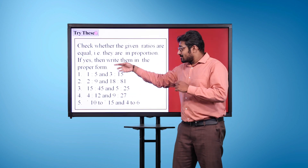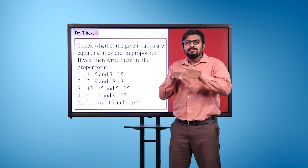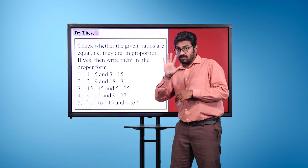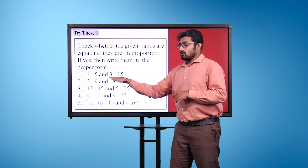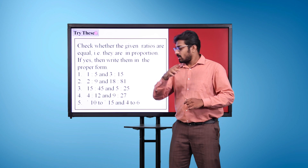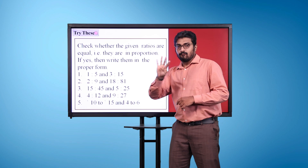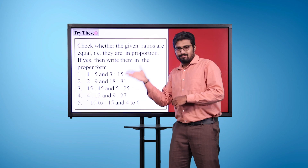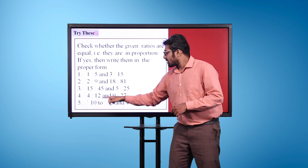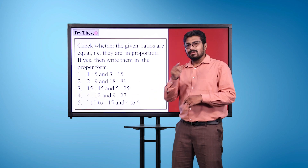Try these. Check whether the given ratios are equal, that is, they are in proportion. If yes, then write them in the proper form. 1. 1 is to 5 and 3 is to 15. 2. 2 is to 9 and 18 is to 81. 3. 15 is to 45 and 5 is to 25. 4. 4 is to 12 and 9 is to 27. 5. 10 rupees to 15 rupees and 4 to 6.